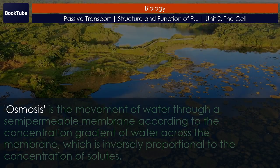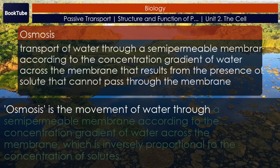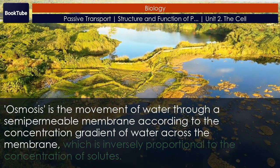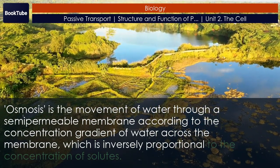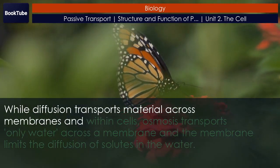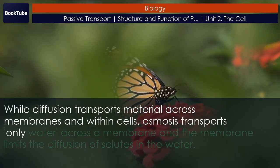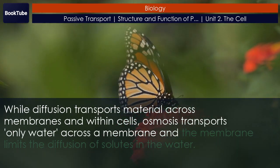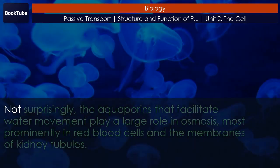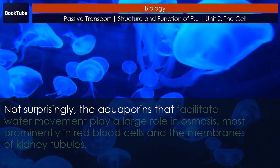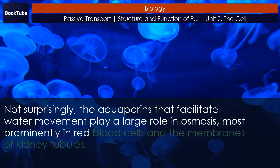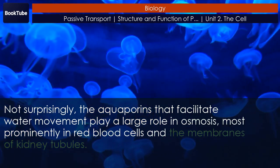Osmosis is the movement of water through a semi-permeable membrane according to the concentration gradient of water across the membrane, which is inversely proportional to the concentration of solutes. While diffusion transports material across membranes and within cells, osmosis transports only water across a membrane and the membrane limits the diffusion of solutes in the water. Not surprisingly, the aquaporins that facilitate water movement play a large role in osmosis, most prominently in red blood cells and the membranes of kidney tubules.